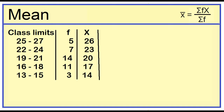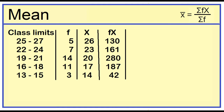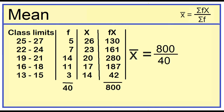Let's add another column for the product of the frequency and the class mark. 5 times 26 is 130, 7 times 23 is 161, 14 times 20 is 280, 11 times 17 is 187, and 3 times 14 is 42. The sum is 130 plus 161 plus 280 plus 187 plus 42, which equals 800. The total frequency is 5 plus 7 plus 14 plus 11 plus 3, which equals 40. Dividing 800 by 40, the mean is 20.